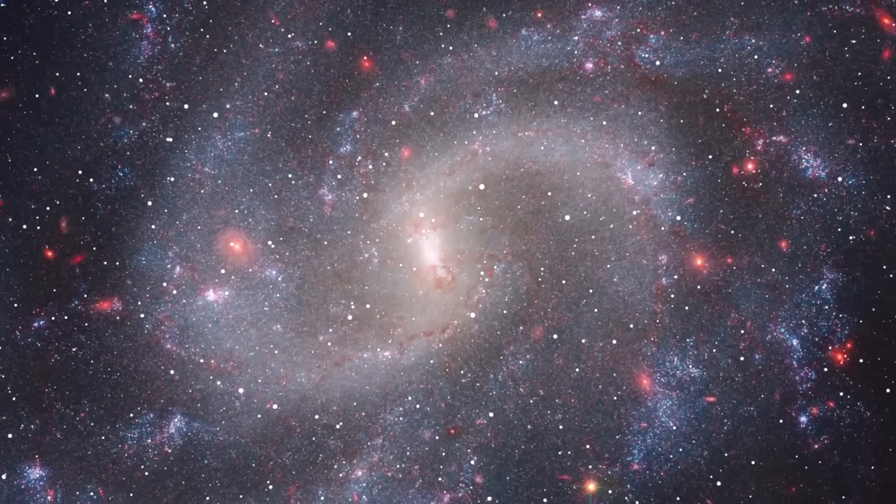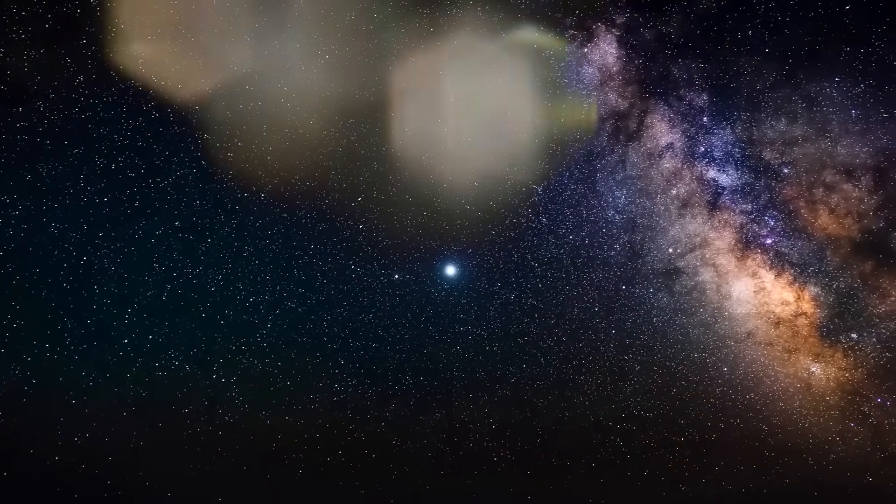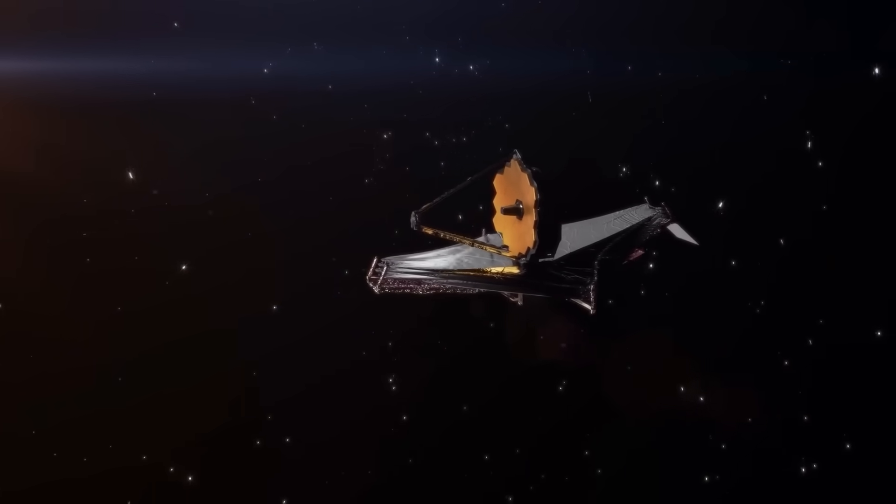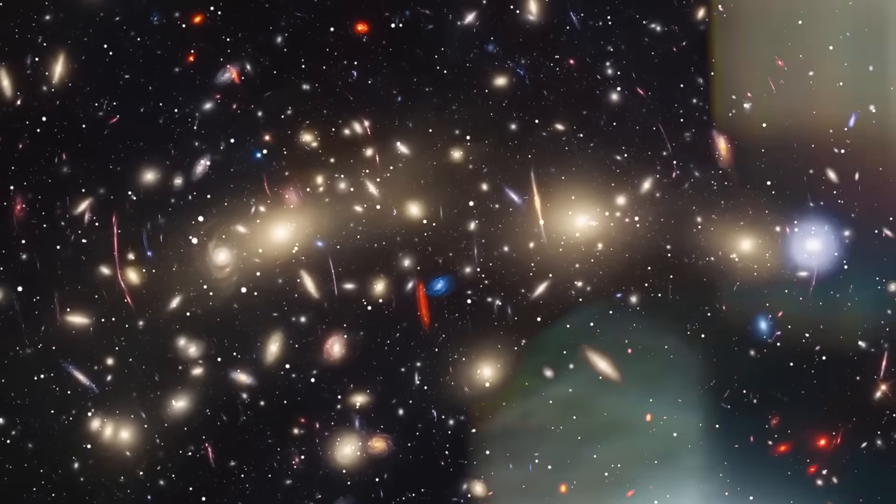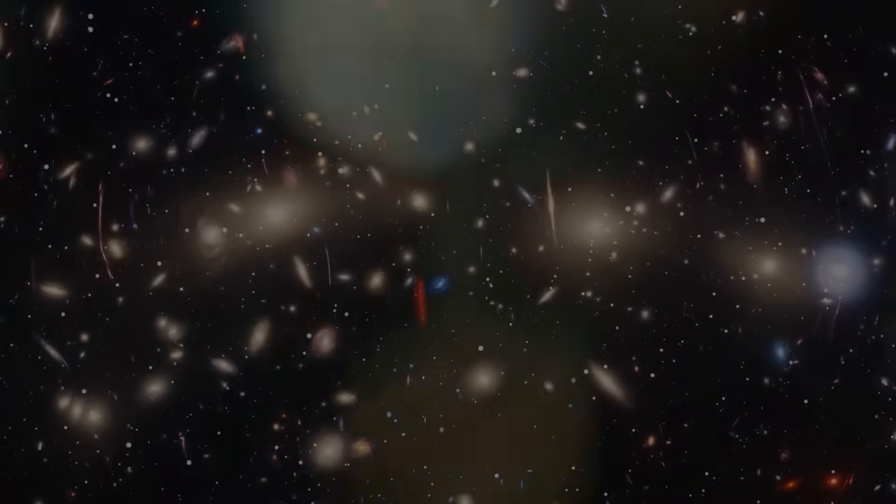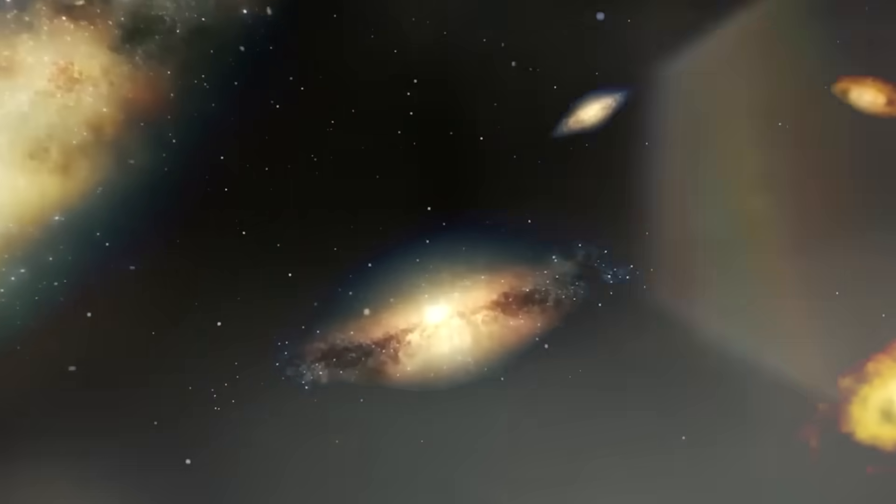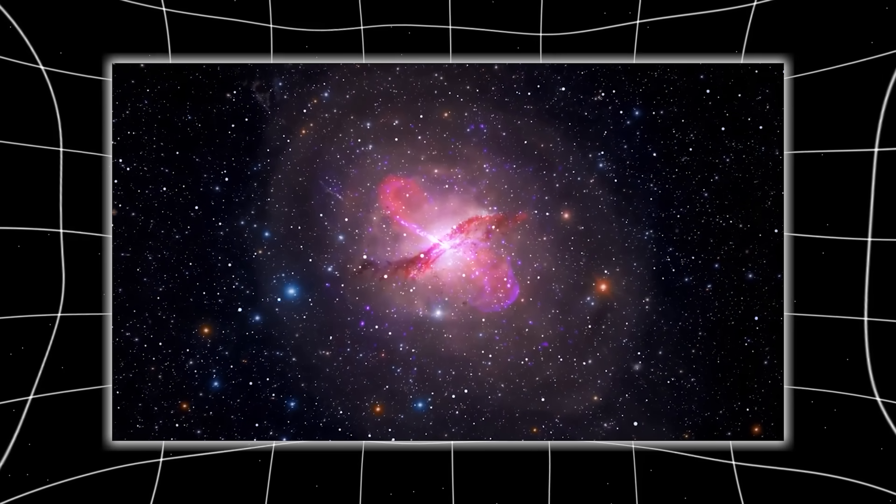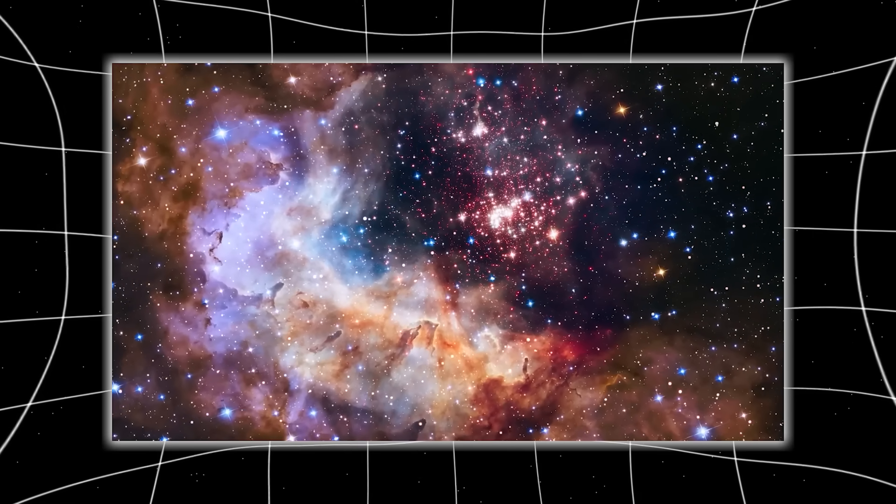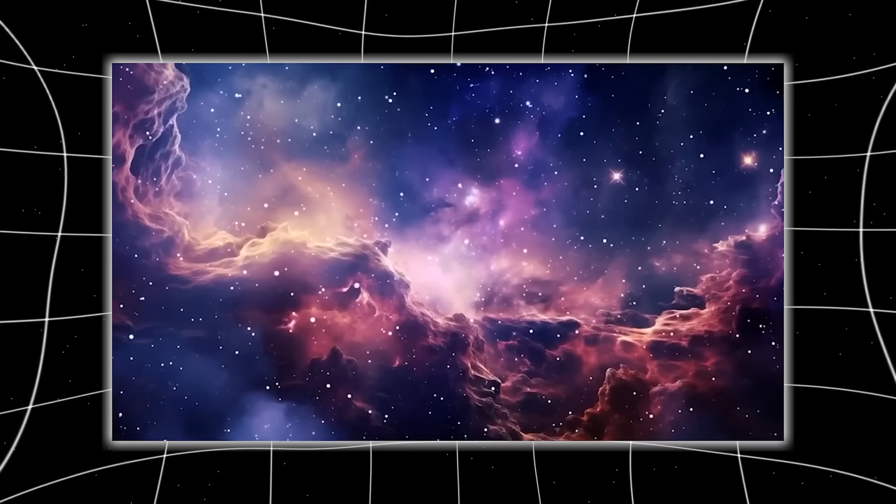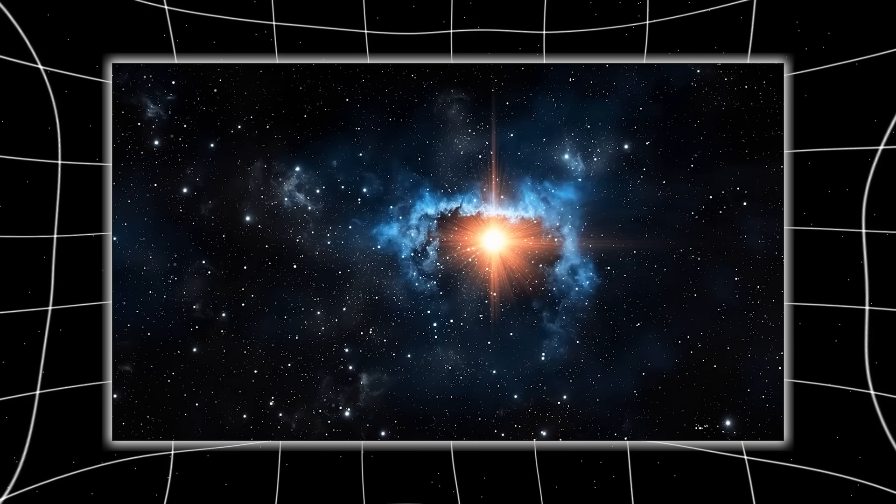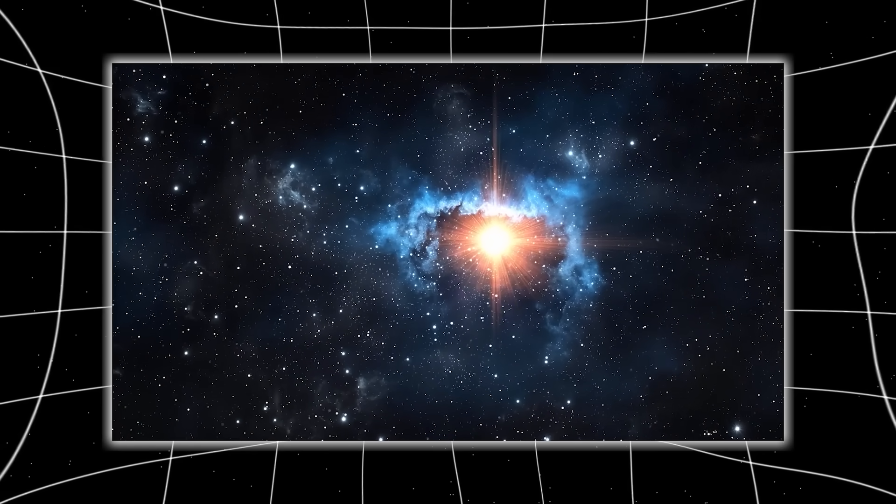When the Webb Telescope first captured the image of what now seems to be an impossibly mature galaxy, sitting over 13 billion light-years away, it was expected to be another faint, ancient smear of light barely distinguishable from background noise. But instead, what stared back was nothing short of architectural elegance. Spiral arms wrapped like ribbons of starlight, dense star clusters orbiting in harmony, and a dense core pulsing with energy. This galaxy wasn't forming, it was formed. And not just barely. It looked like something we'd expect to find several billion years into the universe's timeline, not within the first few hundred million years after the Big Bang.